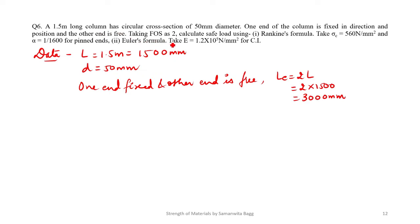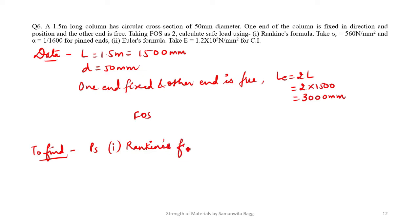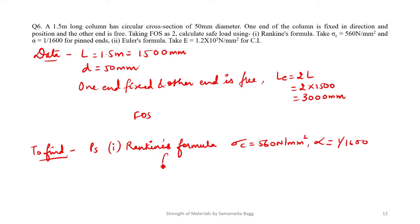Since one end is fixed and the other is free, the effective length is 2 times L, that is 2 into 1500, which is 3000 mm. The factor of safety is 2. I need to find the safe load. For Rankine's formula, sigma c is given as 560 Newton per mm² and alpha is given as 1/1600 for pinned ends.